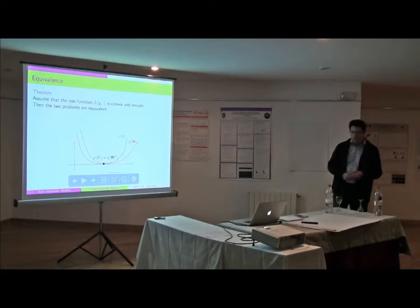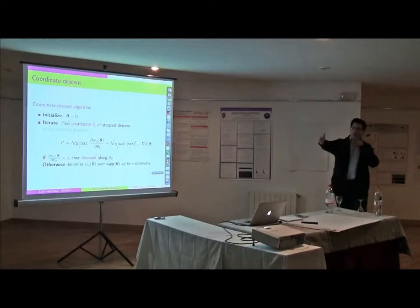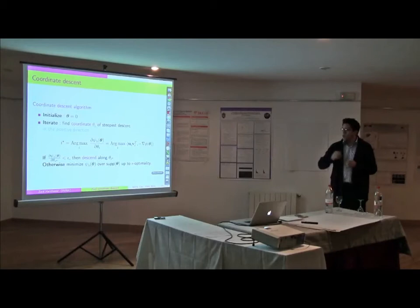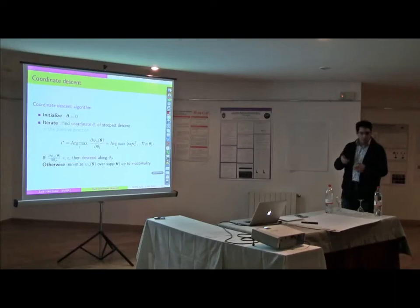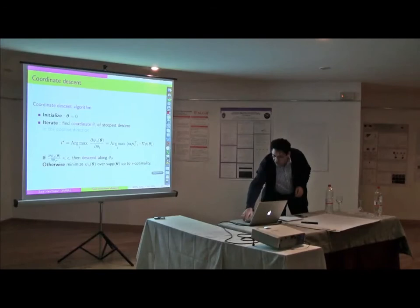Now, the coordinate descent algorithm works as follows. We have this decomposition onto the over-complete dictionary, and at every iteration, we pick a coordinate that yields the steepest descent. If we don't have a sufficient descent, then we perform a subspace minimization.